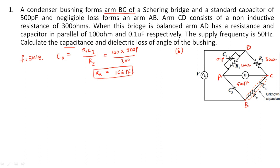Another quantity asked is the dielectric loss angle. We know the dissipation factor is ω·Rx·Cx. You can also write this as ω·R1·C1. If you substitute Rx and Cx, you will get ω·R1·C1.